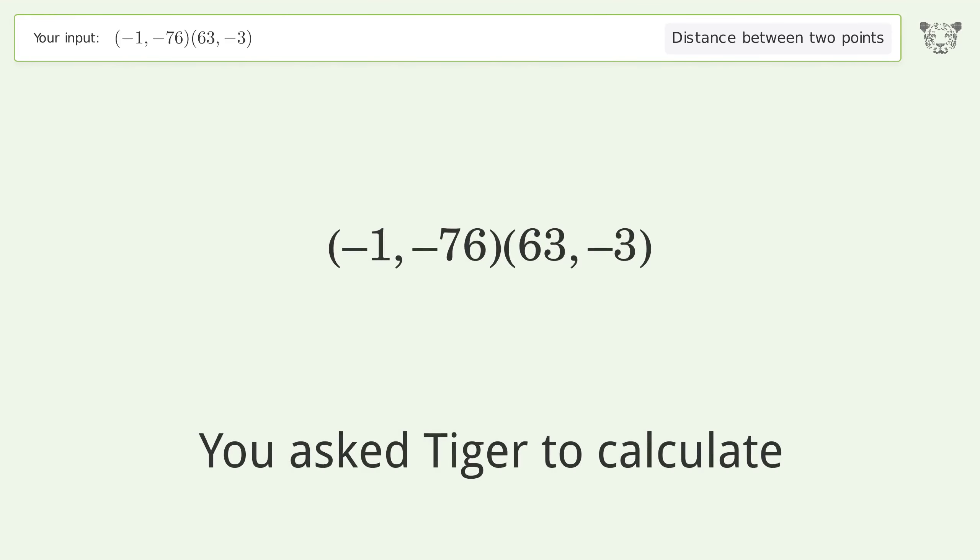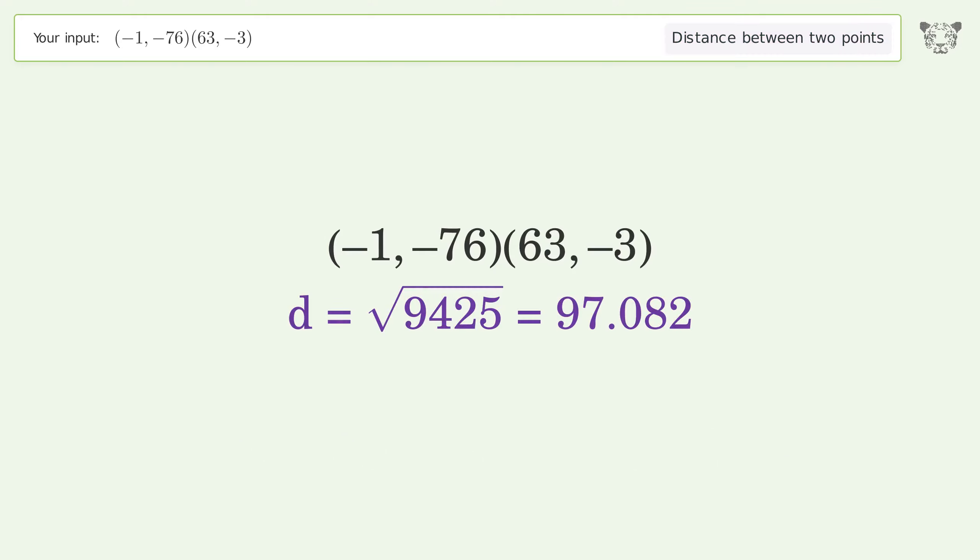You asked Tiger to calculate the distance between two points. The distance between the two points is the square root of 9425, or 97.082.